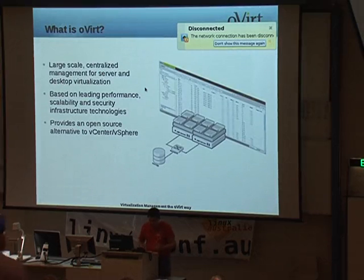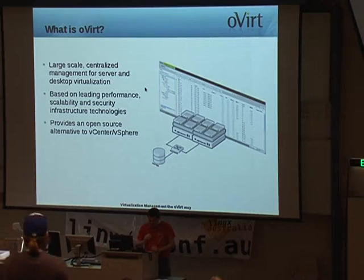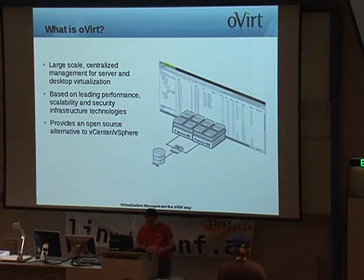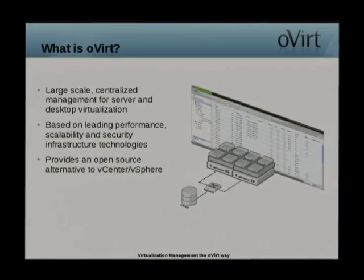Just a little bit about me. I've been working with virtualization technologies for the last six years, including VMware, Xen, and KVM systems. For the last two years, I've worked with Red Hat as a technical writer for the cloud and virtualization products. I've been writing for oVirt for about the last year and a half. My favorite part, which I'll get to, is the API — it's a REST-based API and I find it very clean and easy to use.